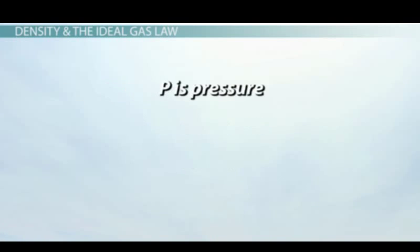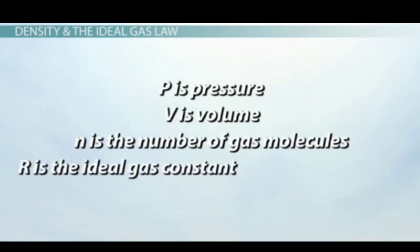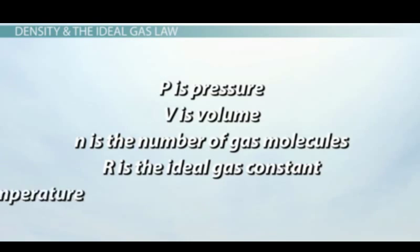P is pressure, V is volume, N is the number of gas molecules, R is the ideal gas constant, and T is temperature.